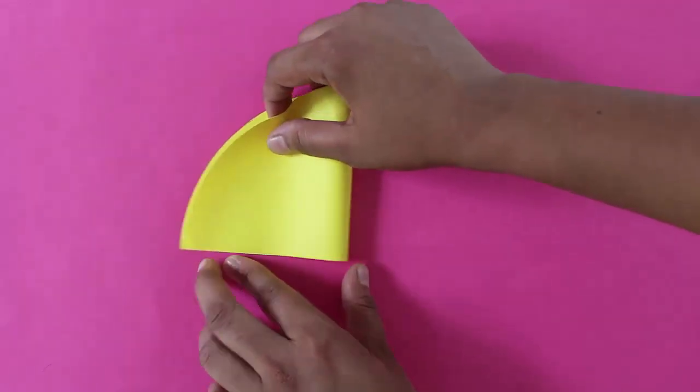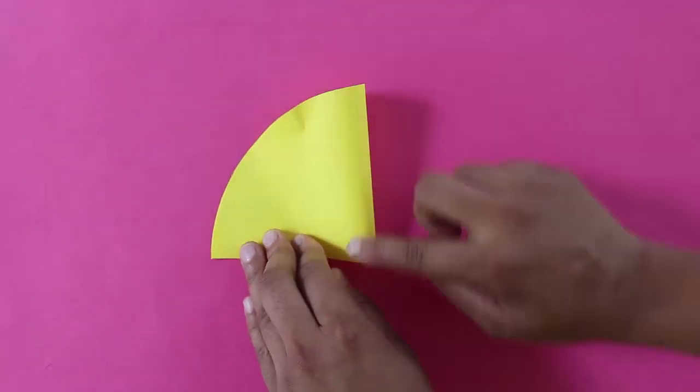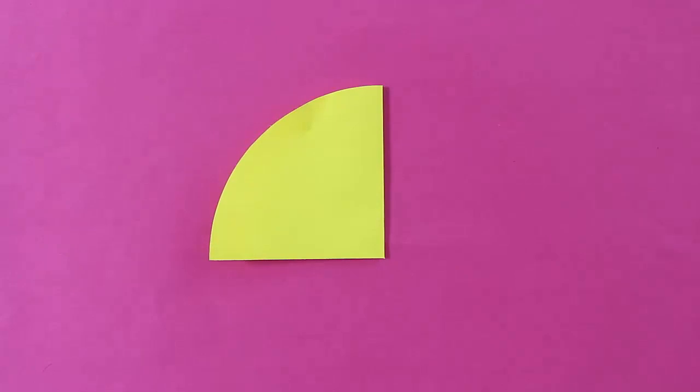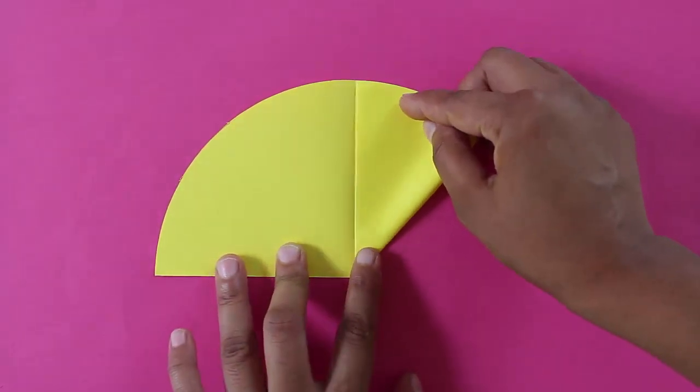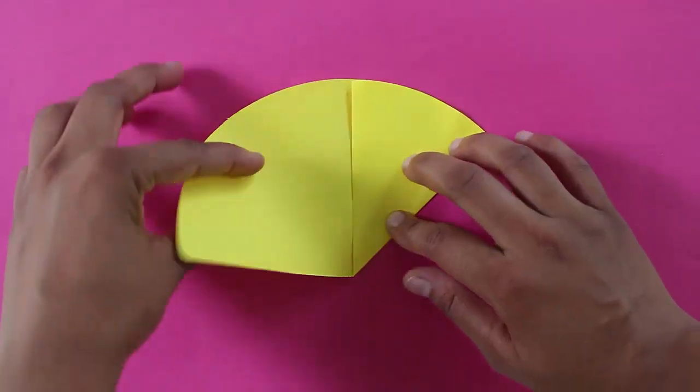Fold the semicircle into half, crease the midline and open it. Then fold both the radii along this midline.